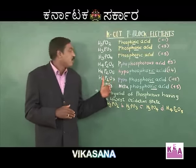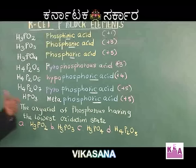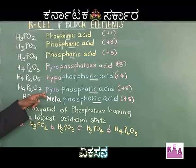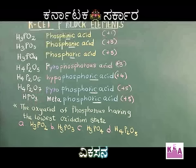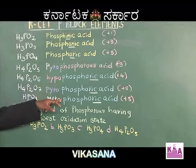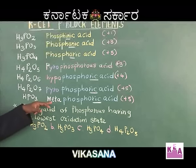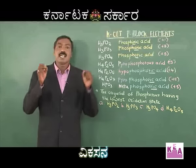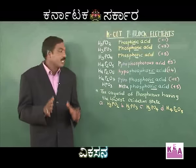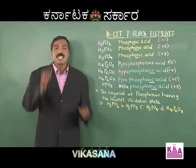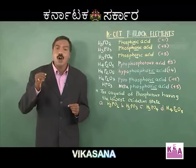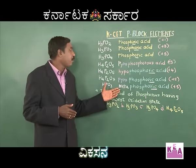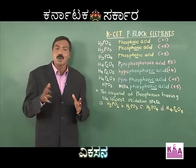Further down the series, I have pyro, followed by another pyro in the next position, then hypo in between. The last three end with 'ricacid' — that is a code word to hold onto. So the correct methodology to learn the sequence is: 'in, on, or,' followed by pyro, followed by hypo, then pyro, and finally meta.